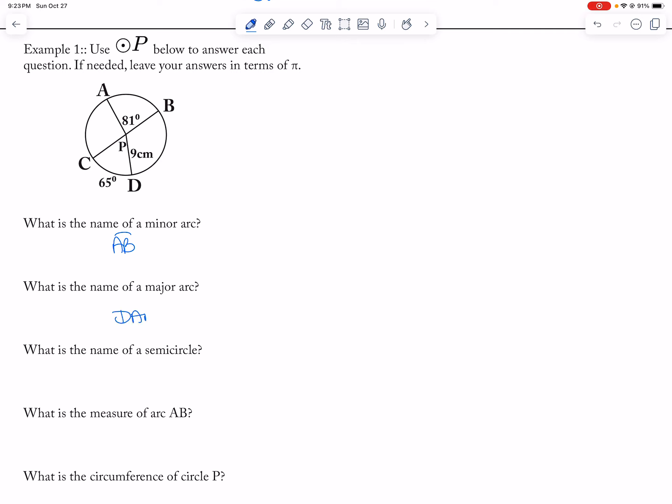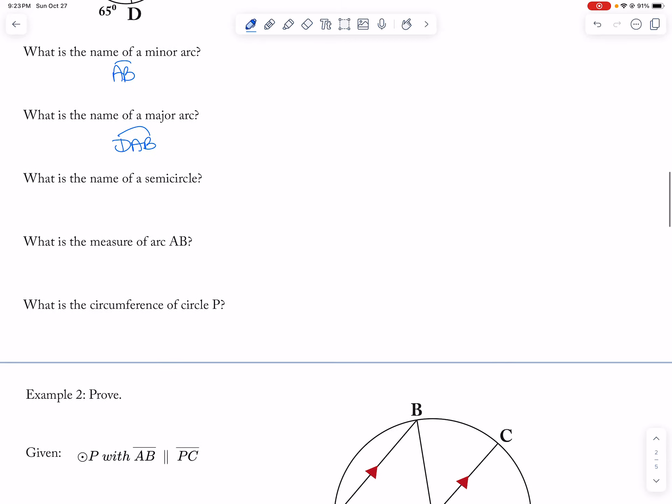Major arc DAB. So, that's typically you'll use more than one letter to describe an arc. Semi-circle CAB.